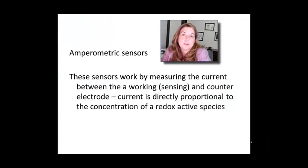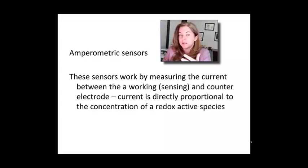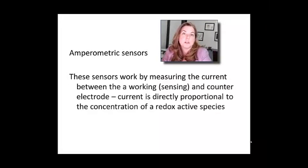An amperometric sensor, instead of measuring electrochemical potential, measures the current generated at a working or sensing electrode. A key difference is that electrochemical potential is proportional to the log of species concentration. In an amperometric sensor, current is directly proportional to the concentration of species in solution. That's potentially a problem for large dynamic ranges, but it has a different relationship to analyte concentration than potentiometric sensors.